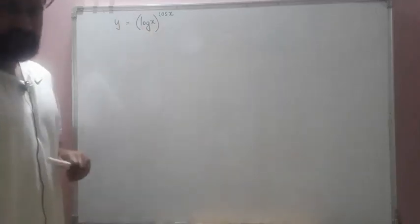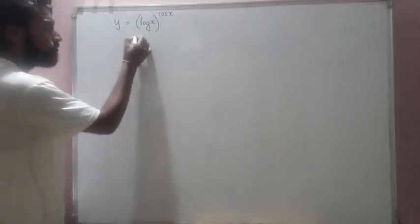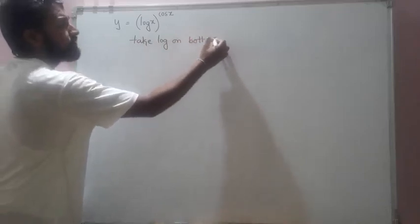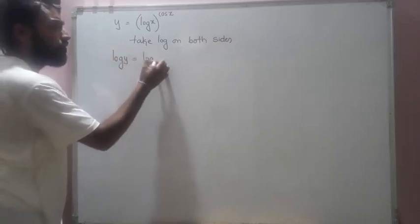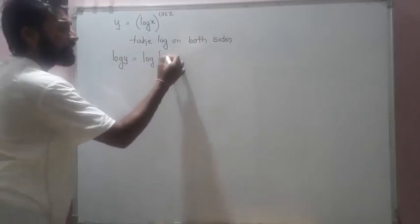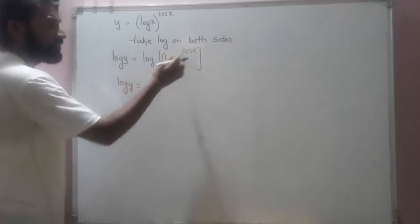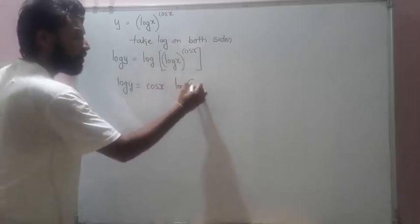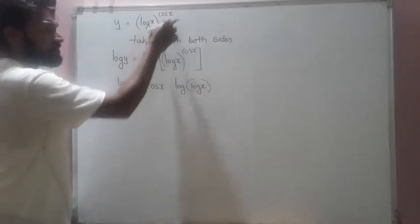The next question is y = (log x)^(cos x). Again we see a function raised to a function, so we take log on both sides. We get log y = log[(log x)^(cos x)]. Applying the power rule, the power comes to the front: log y = cos x · log(log x).